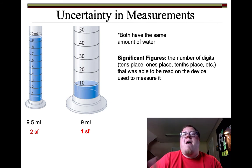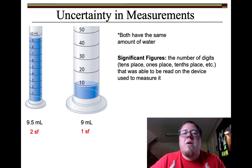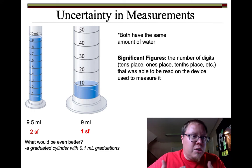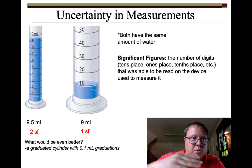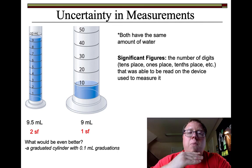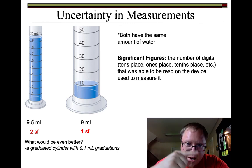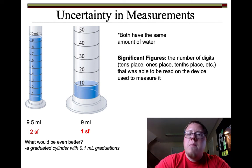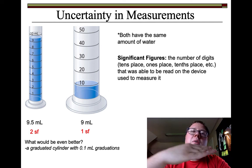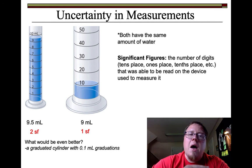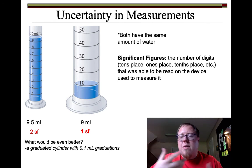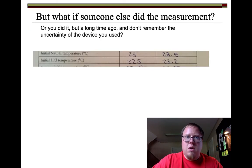An even better device — something that would give me three significant figures — would be a graduated cylinder with lines between the 9 and the 10. Then I'd be able to actually read 0.1, 0.2, 0.3 graduations and read between them. I wouldn't just get a decimal like 9.5 — I'd be able to get something like 9.52 milliliters. That would have three significant figures.